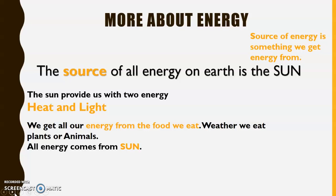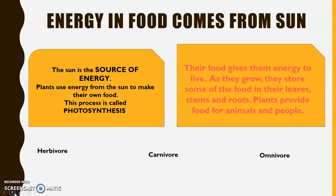We will unpack this topic more when we learn about food chains. Energy in food comes from the sun — the sun is a source of energy. Plants use energy from the sun to make their own food, and remember, I taught you that this process is called photosynthesis.